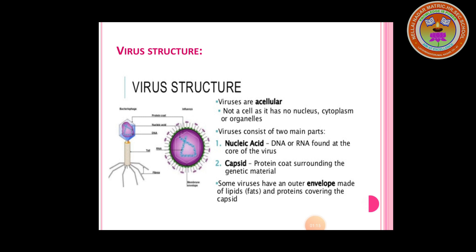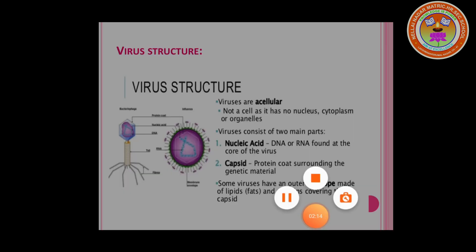Now, the structure of a virus. Viruses are acellular, meaning they do not have a proper cell or cellular structures such as nucleus, cytoplasm, or organelles. A typical virus contains two main parts: nucleic acid and capsid. The genetic material of a virus is called nucleic acid — it may be DNA or RNA. This genetic material is surrounded by a protein coat called the capsid. In some viruses, the capsid is covered by an envelope made of lipids and proteins, and the capsid may also contain spikes for attachment. The different parts of the virus are shown in a diagrammatic way.